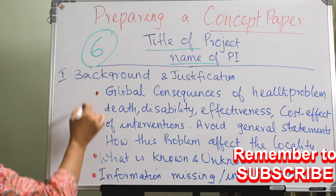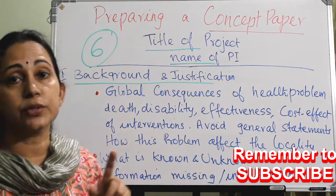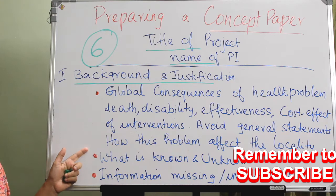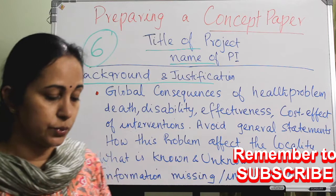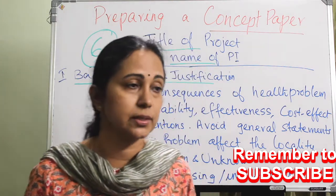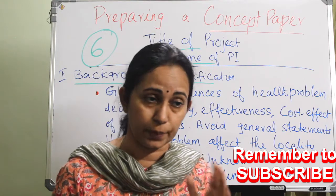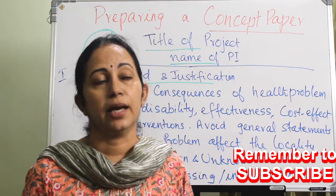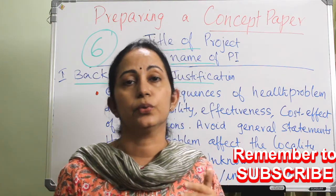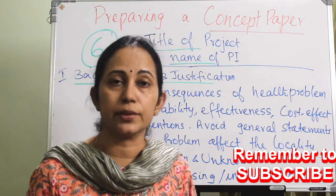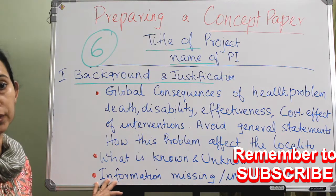The first step of any concept paper is background and justification, and everything should be in bullet points. Under background and justification, there should be three bullets: the first is the importance of your project or proposal; the second is what is known and unknown in that area in relation to existing literature review and the local context; and the third is information that is missing or insufficient.